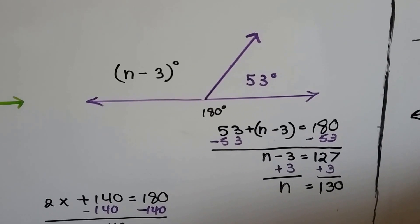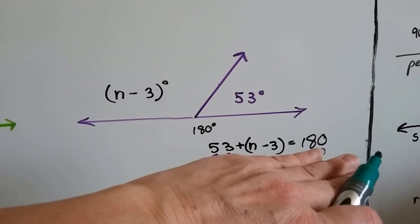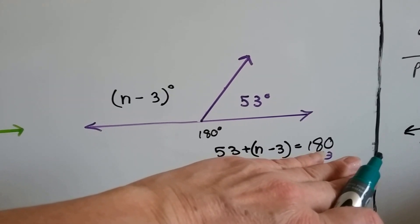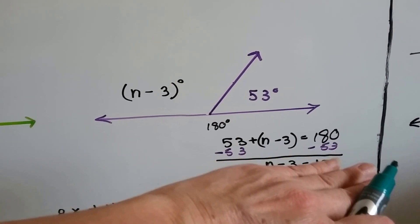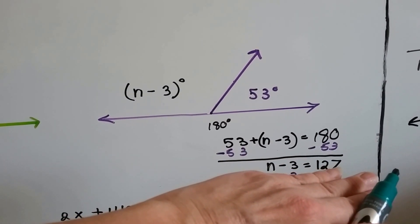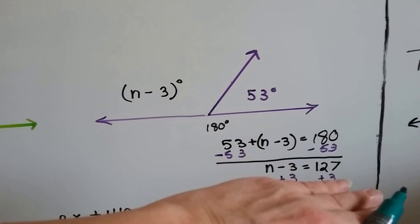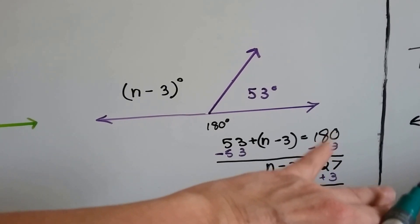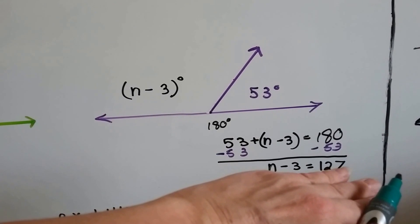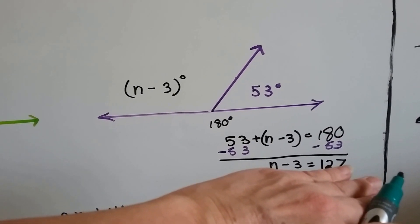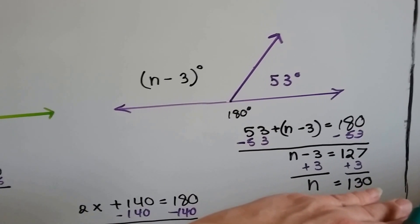So now we've got this one. We've got an n minus 3 and a 53. We know they've got to equal 180. So we've got 53 plus n minus 3 equals 180. So the first thing we do is take the 53 away from each side. And that gives us n minus 3 is 127, because the 53 and 53 are zero pairs, they cancel each other out. We drop down the n minus 3, and 180 minus 53 is 127. So now we've got n minus 3 equals 127. Because it's a minus 3, we add 3 to each side, and we get n is equal to 130.